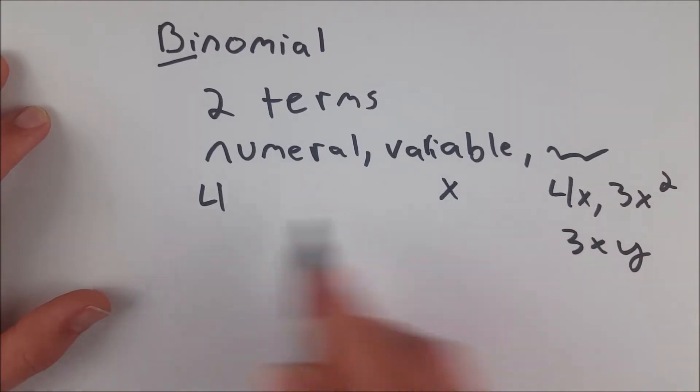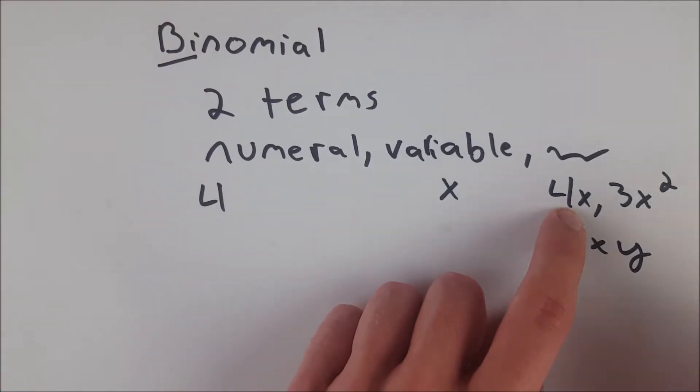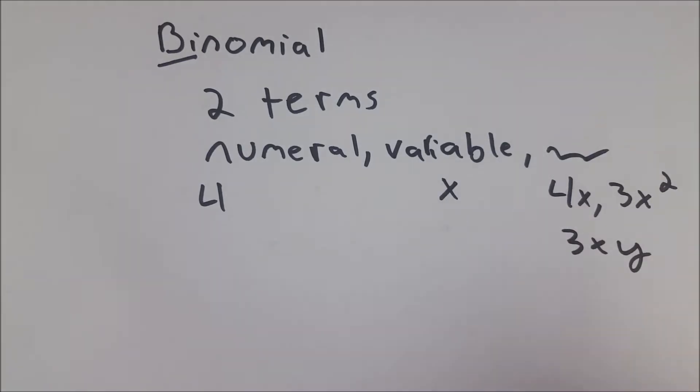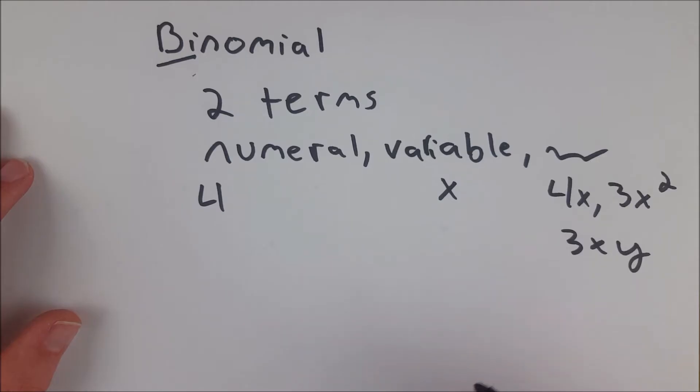These are all individual terms. 4 is one term, x is one term, 4x is one term, and so on. These are all one terms. So if you now know what a term is, you can pretty easily identify binomials as just being a polynomial with two terms.